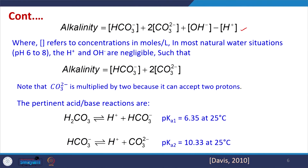Alkalinity is defined by an equation where the parentheses refer to the concentration in moles per liter of the respective ions. In most natural water situations around pH 6 to 8, the H⁺ and OH⁻ ions are negligible. The acid-base reactions can be written as: carbonic acid breaks into H⁺ and bicarbonate ion at a pKa of 6.35, and bicarbonate ion breaks into H⁺ and carbonate ion at a pKa of 10.33 at 25°C.